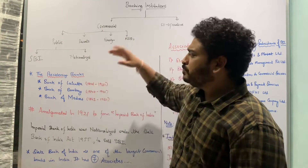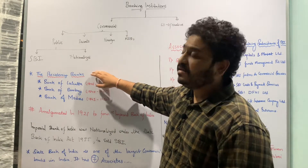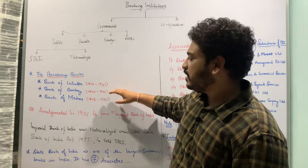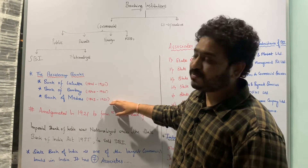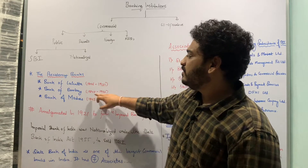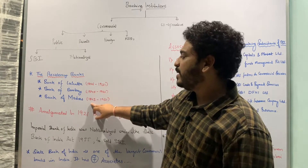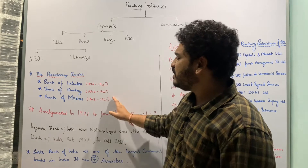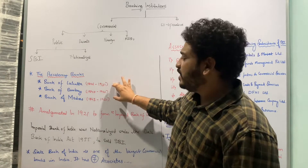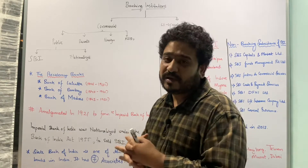Back in the 1800s and 1900s, there were presidency banks established at Kolkata, Bombay, and Madras respectively. The Bank of Kolkata came into existence in 1806, the Bank of Bombay was established in 1840, and the Bank of Madras was established in 1843. These three banks operated from the 1800s all the way until 1921.